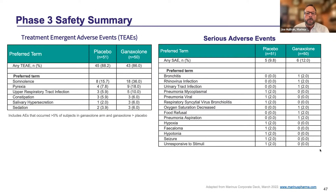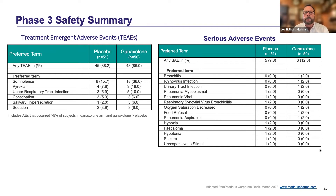On safety, the most common side effect was somnolence in 36% of ganaxolone patients versus about 16% of placebo, but there was only one dropout in each group due to a somnolence-related adverse event. Serious adverse events were balanced between the two groups, with no clustering of any particular serious adverse event in the study.